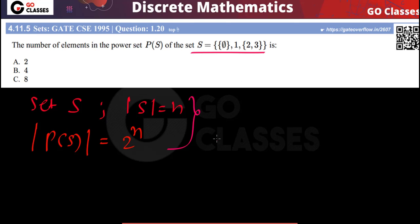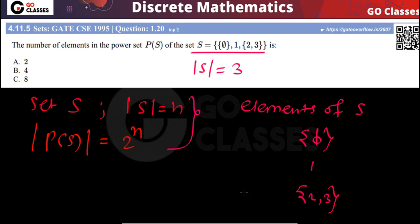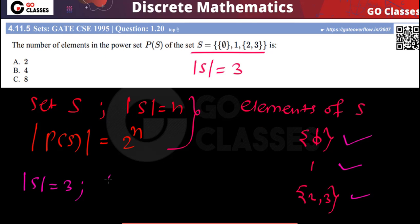Now, what is the cardinality of set S here? You can clearly see that the cardinality of set S is 3, because there are three elements in S. So the number of elements of S is 3. If the cardinality of S is 3, then the cardinality of the power set will be 2 power 3, which equals 8.